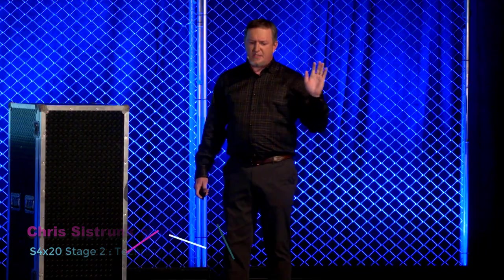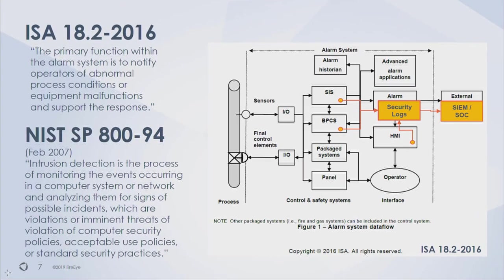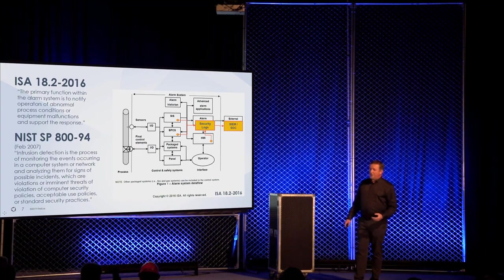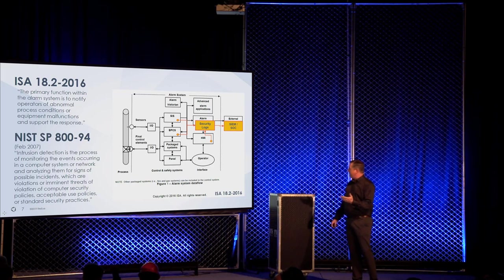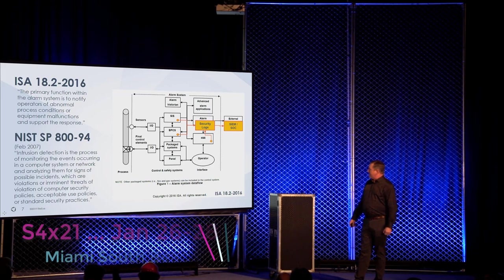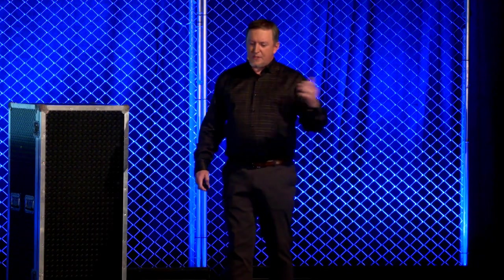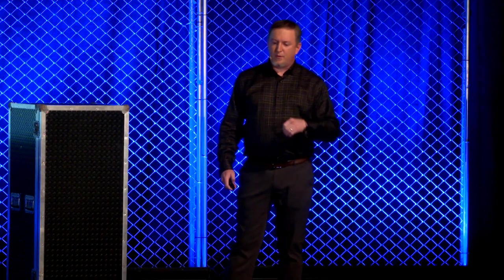Is anyone familiar with ISA 18.2? The primary function within the alarm system is to notify operators of abnormal process conditions or equipment malfunctions and support the response. If you look at this alarm system data flow, you can see where we overlay the security logs piece — sending those security logs to the SIEM or your SOC. We can take ISA 18.2 and port it over, repurposing it for tuning alerts for the SOC.